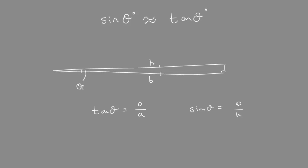From angle theta, the adjacent base is pretty much equal to the hypotenuse, so these two values are approximately equal, and so the ratio will be equal at small angles of theta.